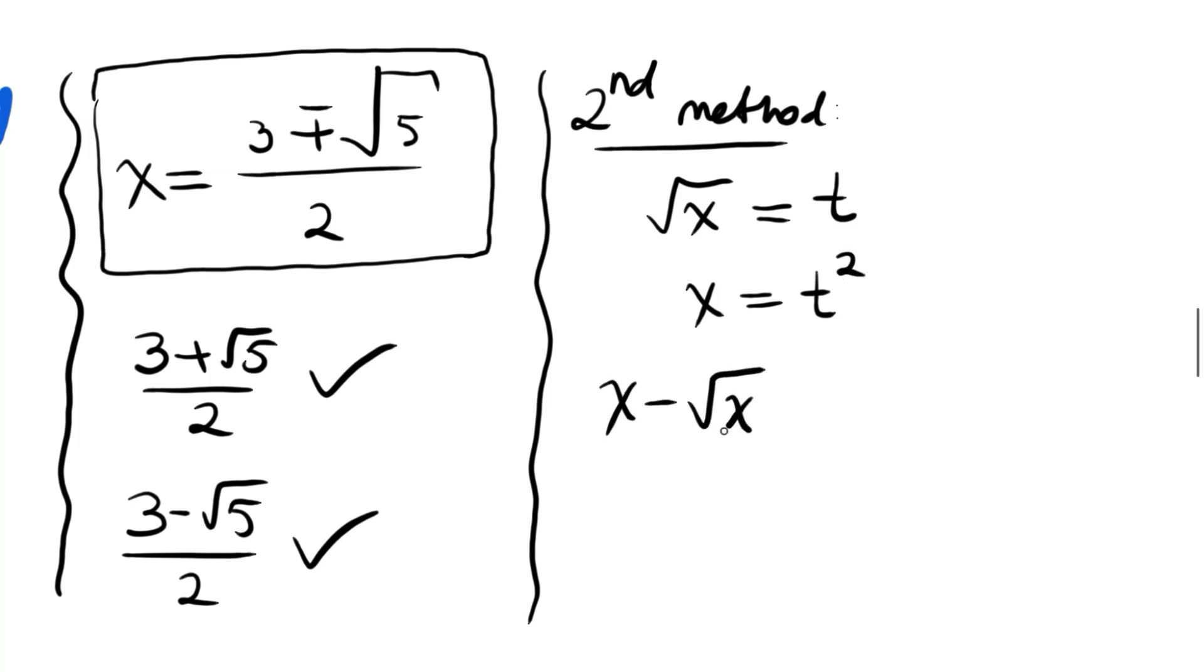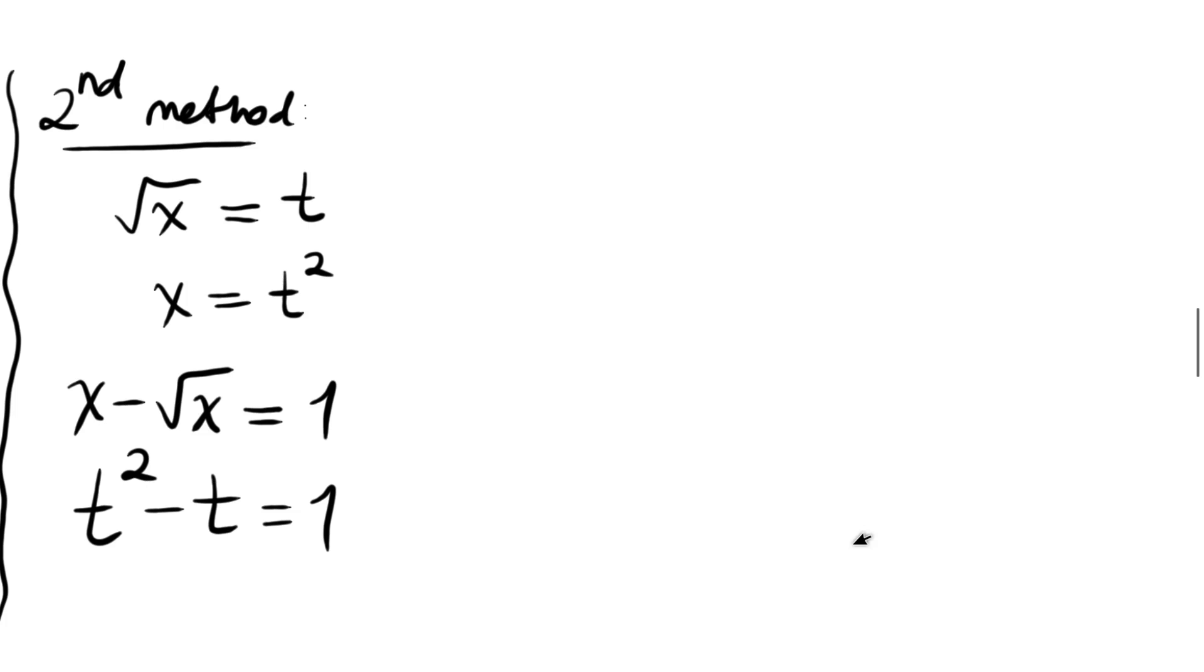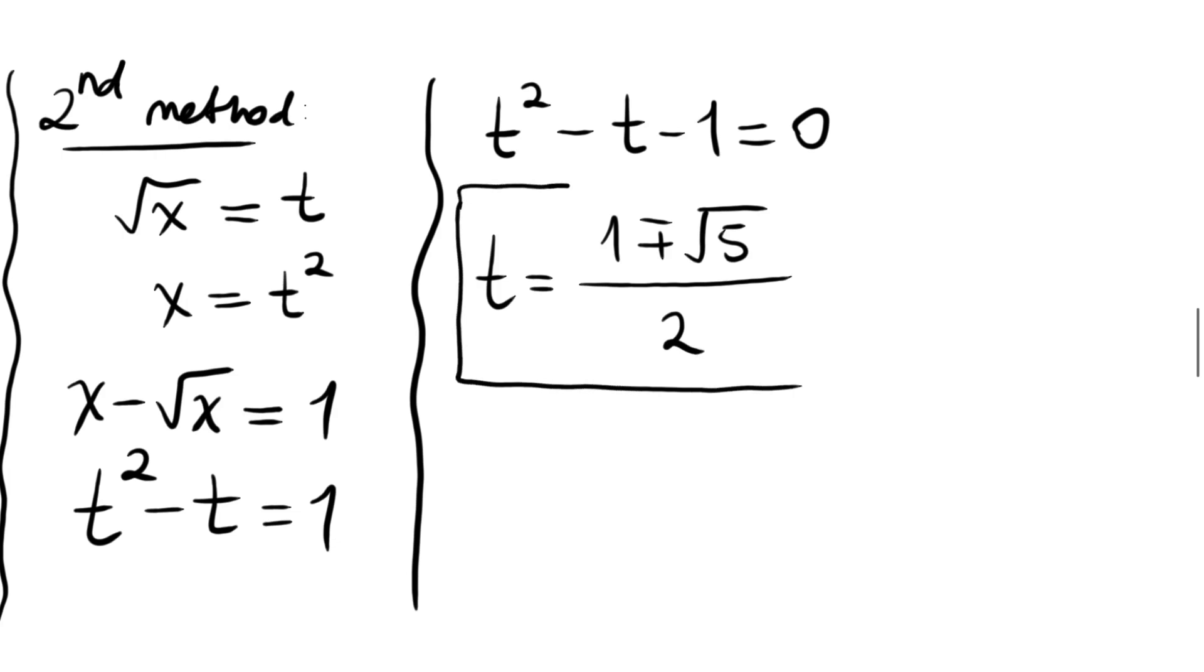So our original equation x minus root x equals 1 turns into t squared minus t equals 1, or t squared minus t minus 1 equals 0. From that, we can again use the quadratic formula, and we will find t equals 1 plus or minus root 5 divided by 2.